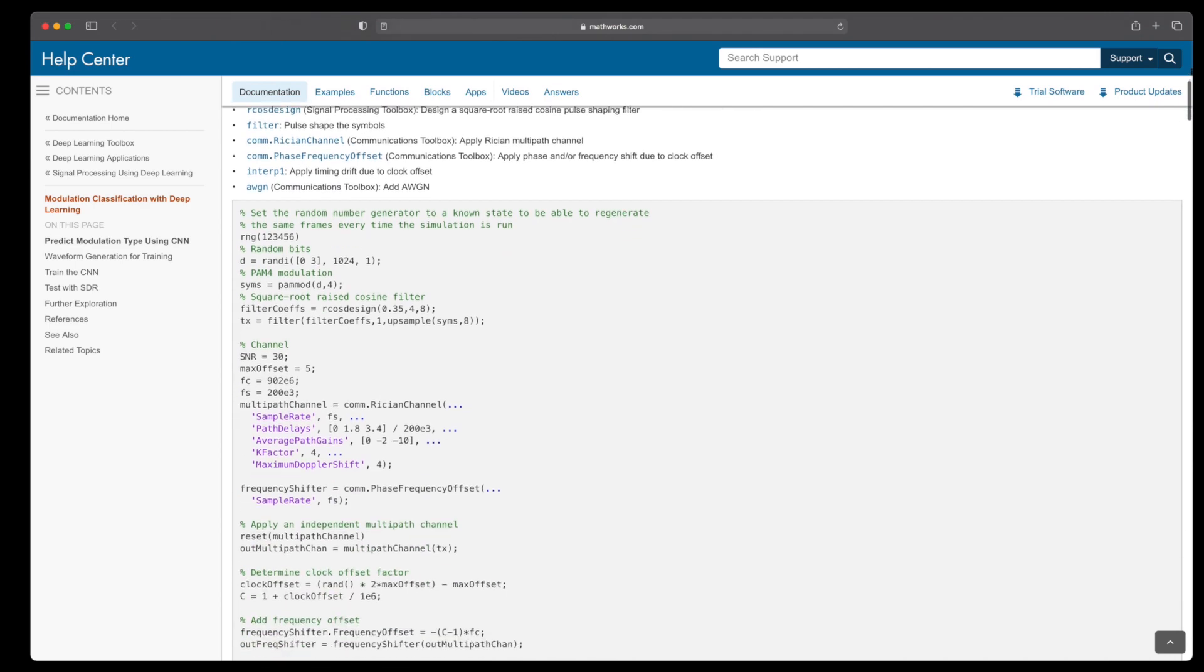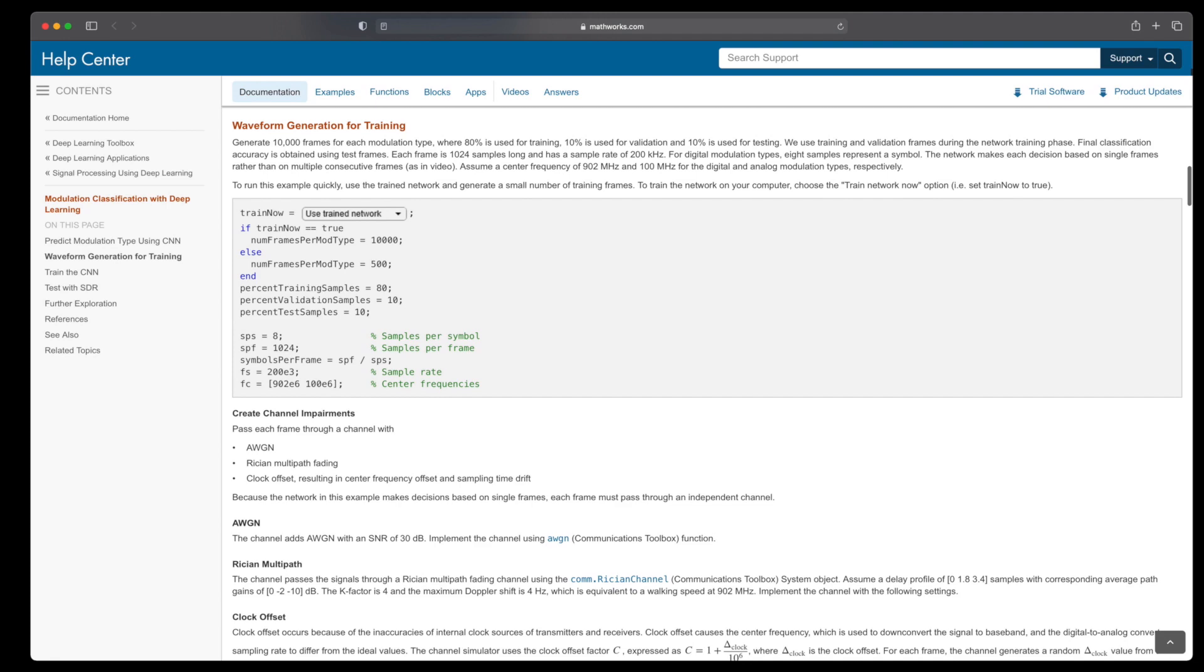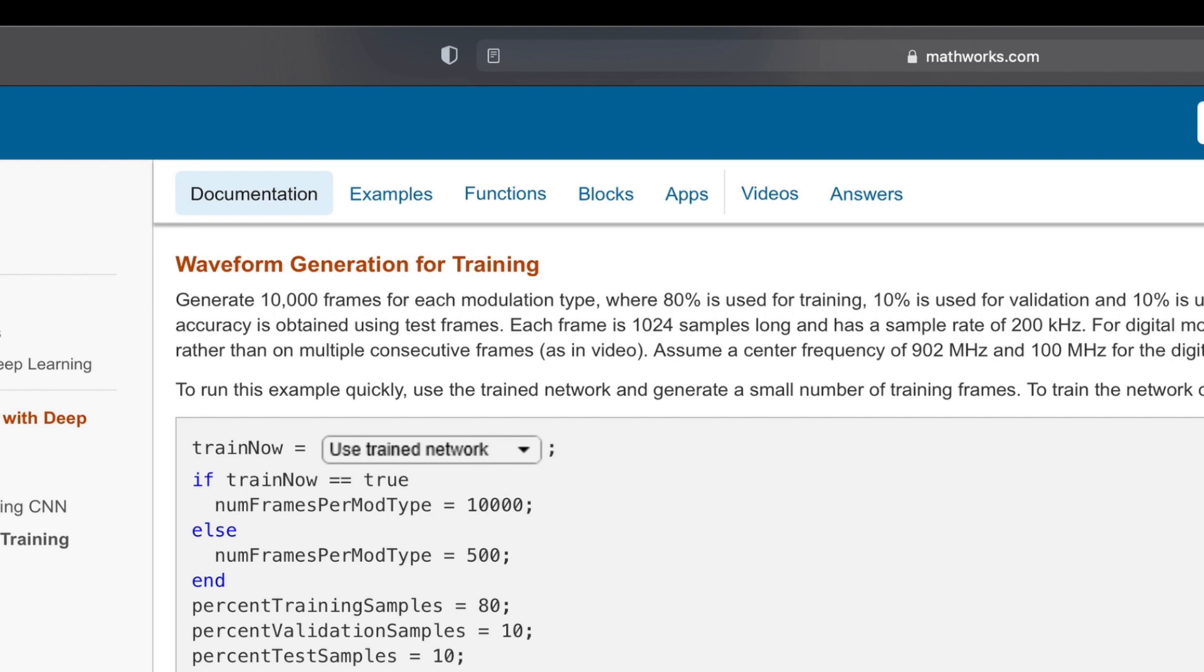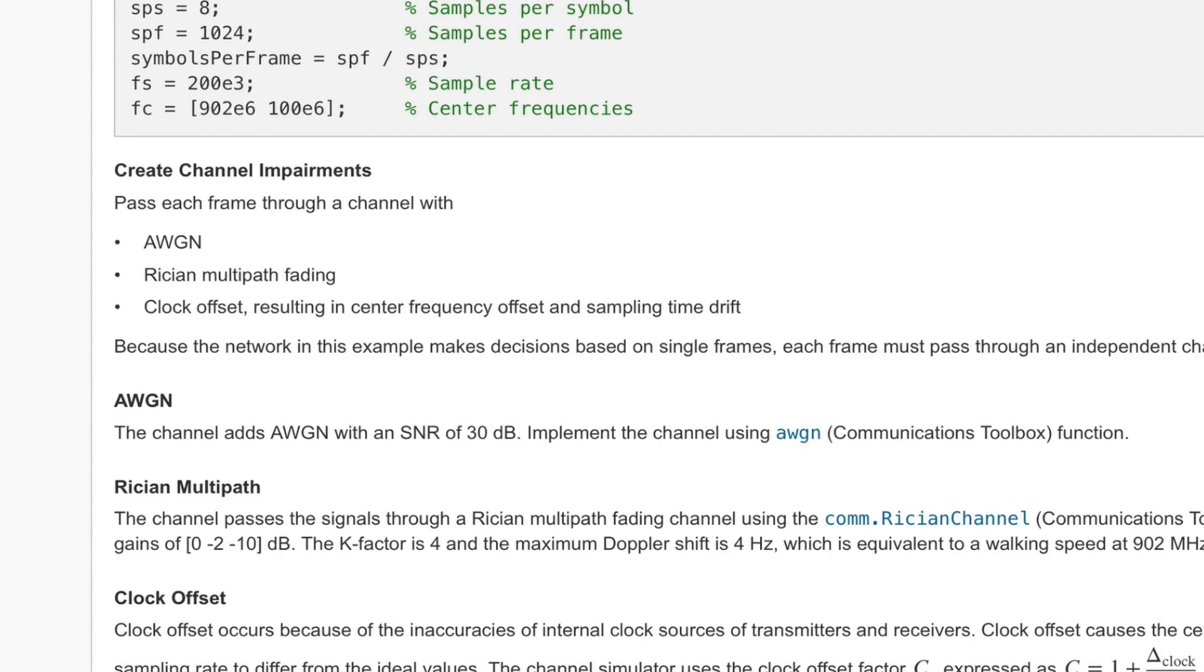But if you can't, you need to train one yourself. So if we scroll past that, the next section is where waveform data is generated, which can be used to train a new model. You can see here that it's generating 10,000 frames for each modulation type. So we're going to get 110,000 signals in just a few minutes. And for each signal, it's adding random amounts of white noise, multi-path fading, and hardware offsets.